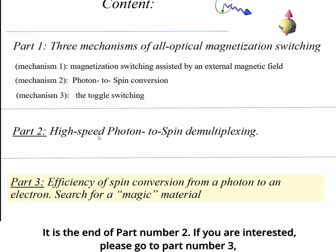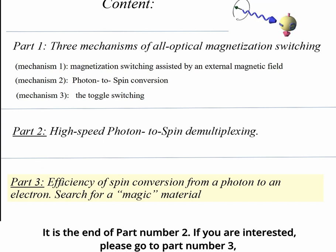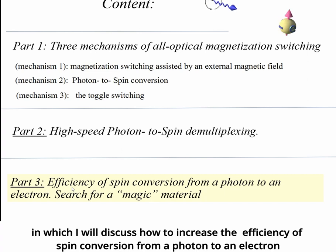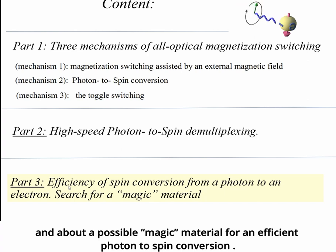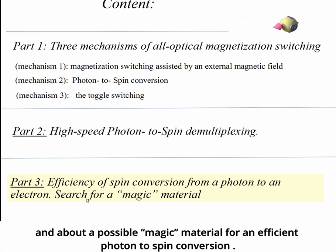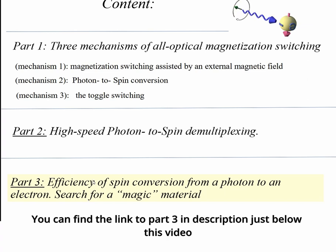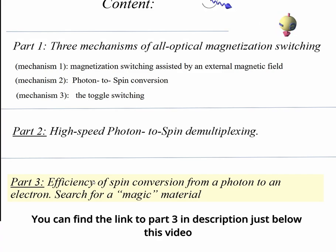This is the end of part number 2. If you are interested, please go to part number 3, in which I will discuss how to increase the efficiency of spin conversion from a photon to an electron, and about a possible magical material for an efficient photon-to-spin conversion. You can find the link to part number 3 in the description just below this video.